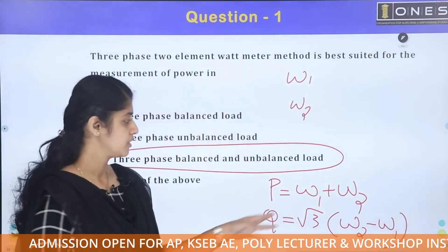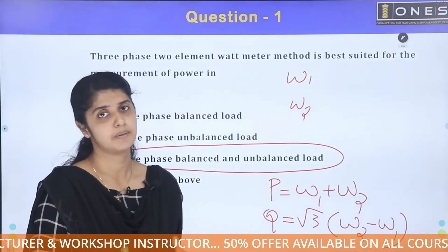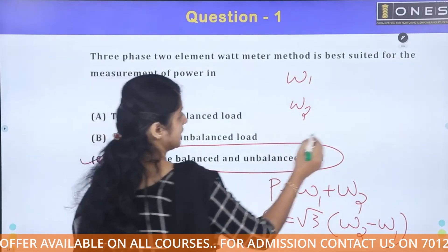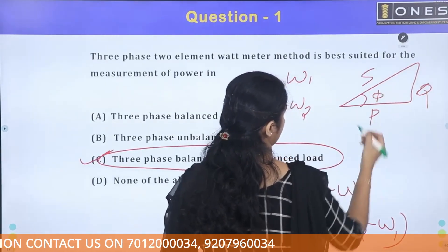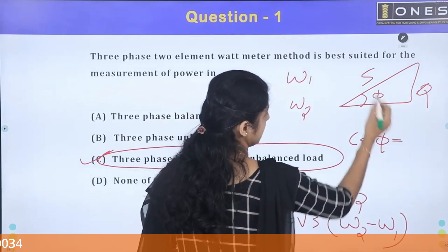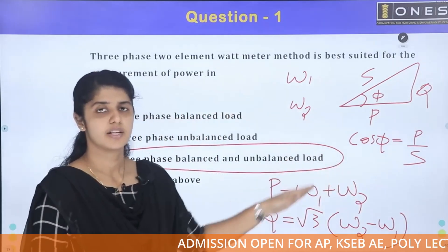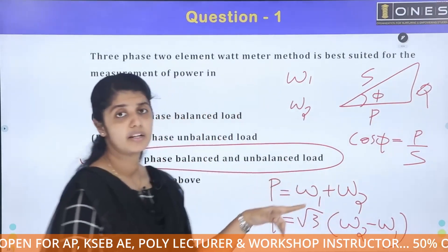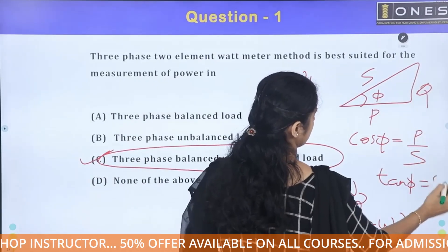The reactive power Q equals root 3 times (W1 minus W2), taking the difference of wattmeter readings multiplied by root 3. We also have apparent power S, and cos phi is equal to P divided by S. Tan phi is equal to Q divided by P.